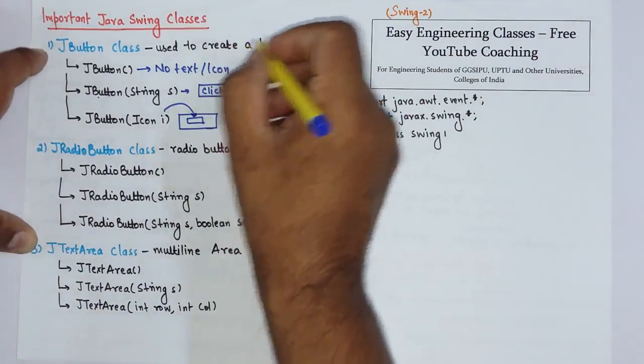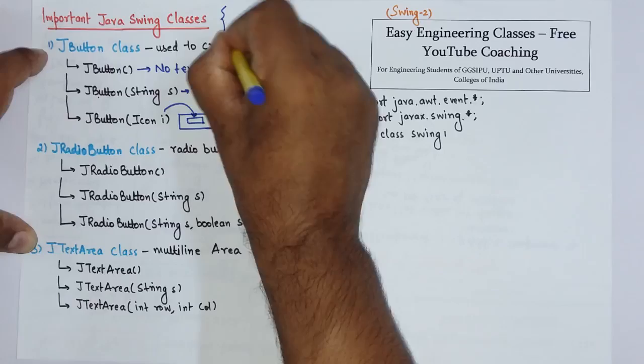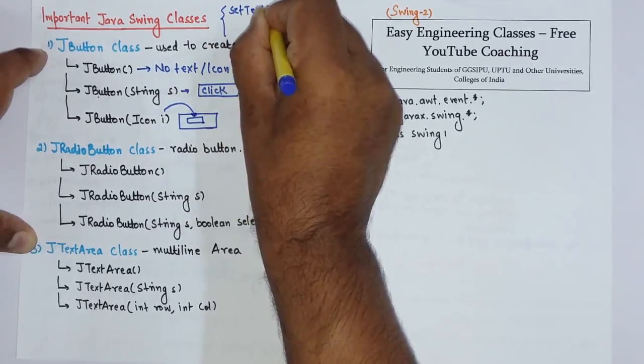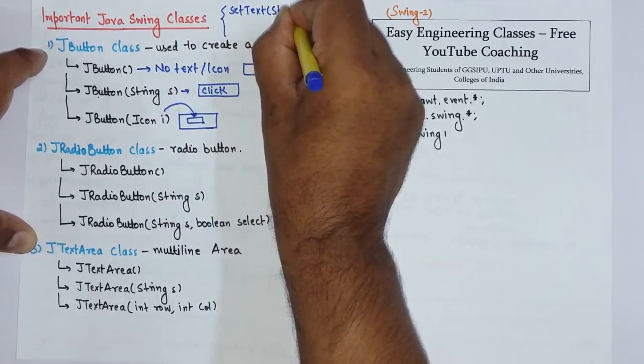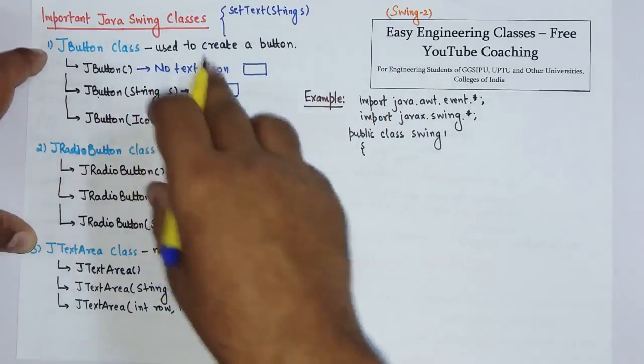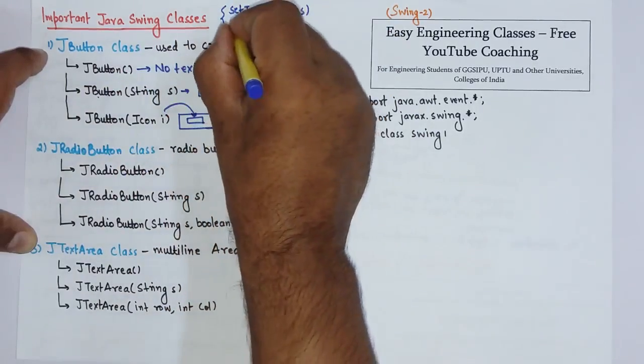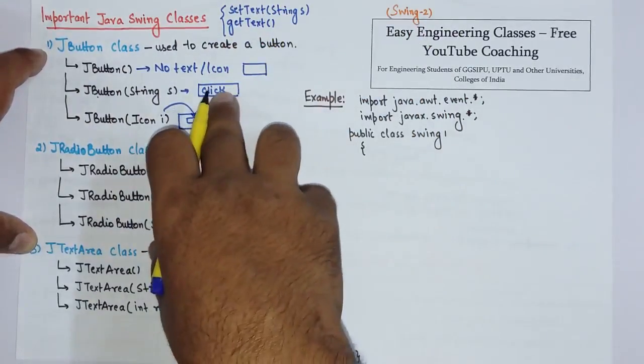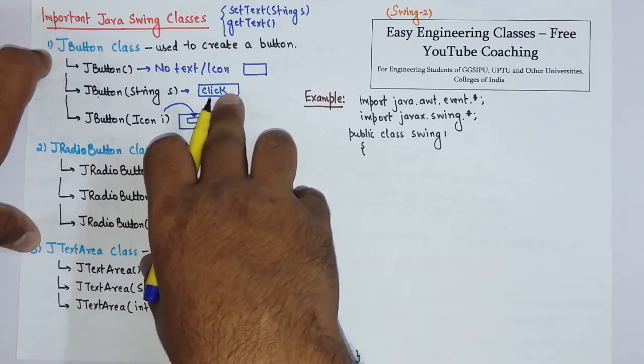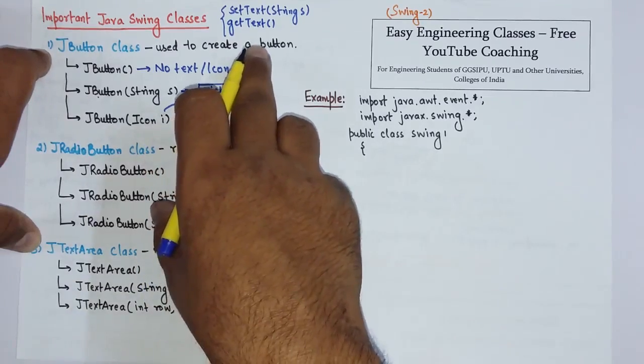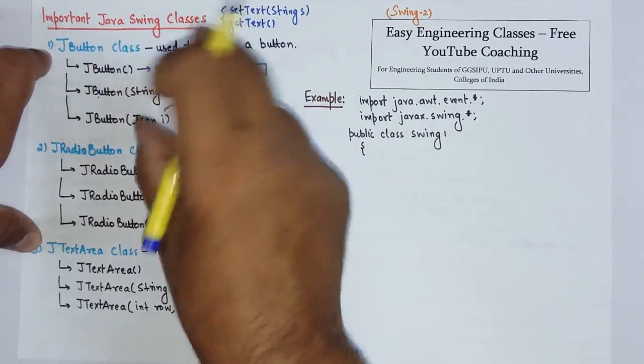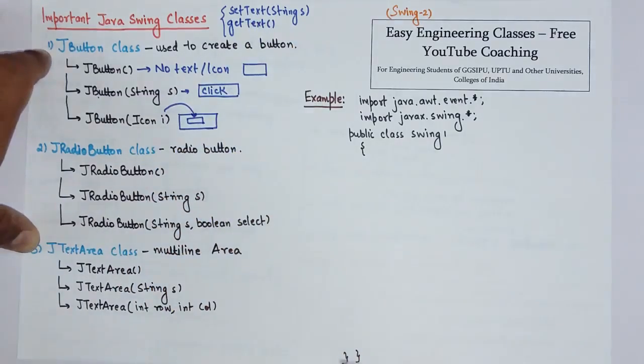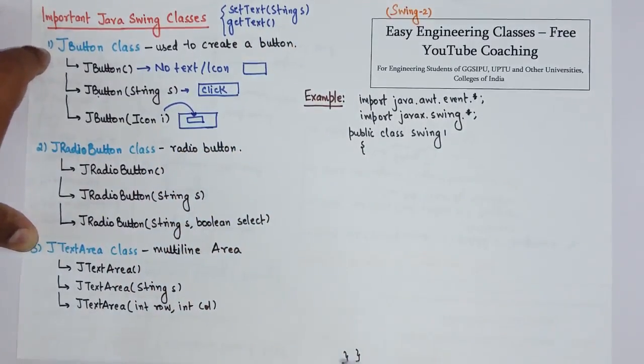There are some of the methods in the button class that you can use such as setText which is used to set the text of button, then we have getText which is used to retrieve the label of the button, then we have setEnable to set the button enable for clicking or disabling it and so on.